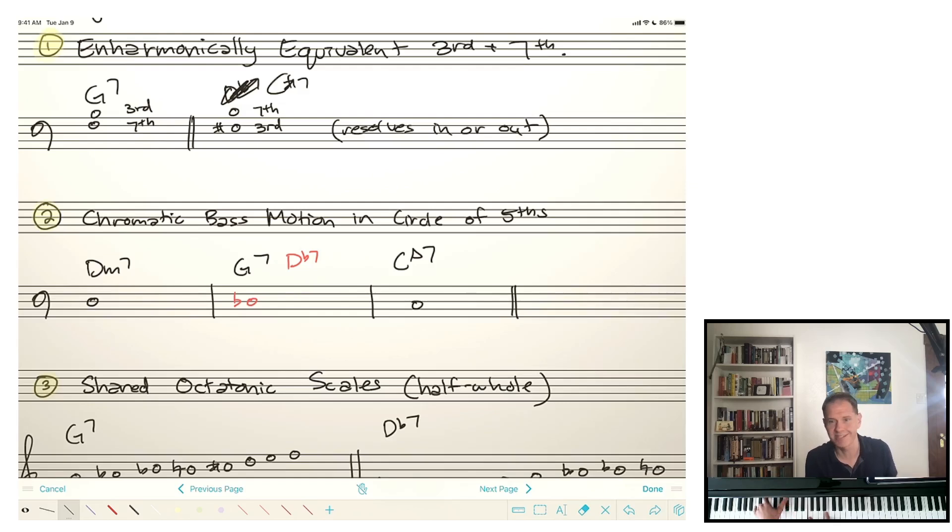The 3rd would be E-sharp, which is enharmonically equivalent to F. And the 7th is B, which is enharmonically equivalent, obviously, or it's the same exact pitch to B. So these two dominant chords share the same 3rd and 7th, even though their roles are actually flip-flopped. And this is key.